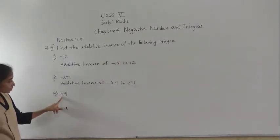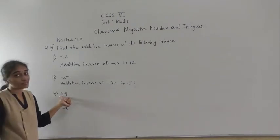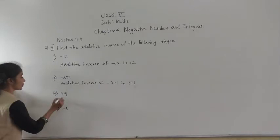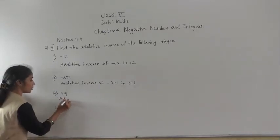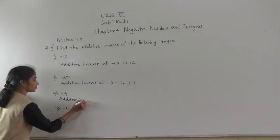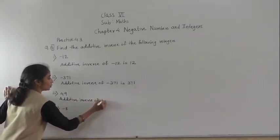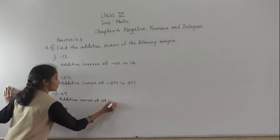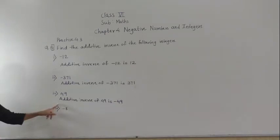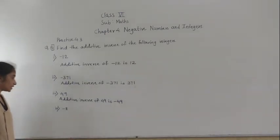Now, what is the additive inverse of 49? 49 means it is plus 49. So what is the additive inverse of 49? Minus 49. So the additive inverse of 49 means minus 49.